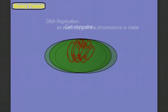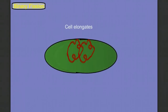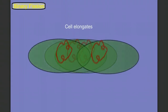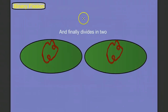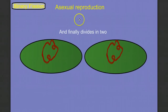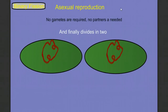The cell is going to start to elongate, and as it does, it pulls those two copies of the chromosome apart. And eventually it divides into two. This is reproduction for bacteria, and it's asexual, meaning we need no gametes. We don't have to produce any special reproductive cells, and we don't need a partner. One cell splits into two.